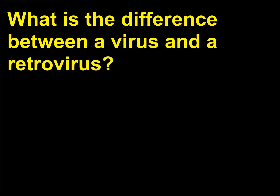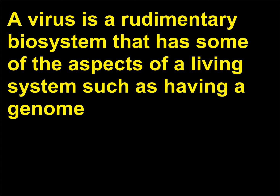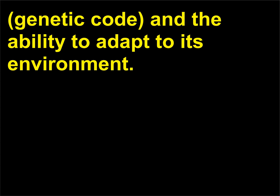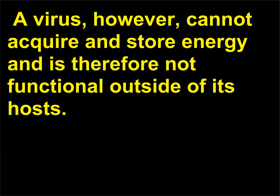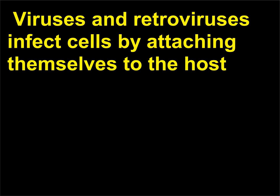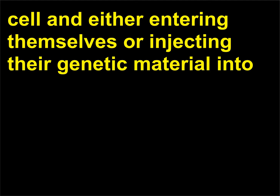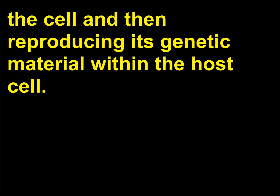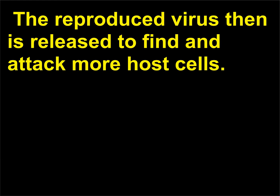What is the difference between a virus and a retrovirus? A virus is a rudimentary biosystem that has some aspects of a living system, such as having a genome, genetic code, and the ability to adapt to its environment. However, a virus cannot acquire and store energy and is therefore not functional outside of its host. Viruses and retroviruses infect cells by attaching themselves to the host cell and either entering themselves or injecting their genetic material into the cell, then reproducing within the host cell. The reproduced virus is then released to find and attack more host cells.